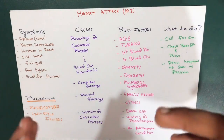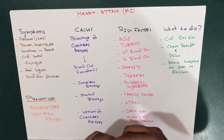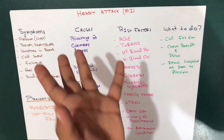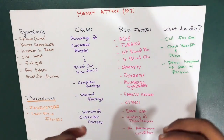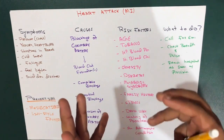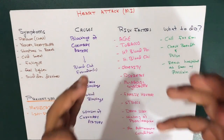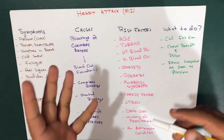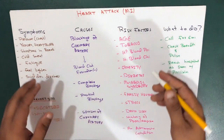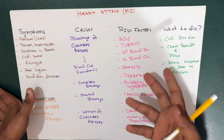During a heart attack, one of these plaques can rupture and spill cholesterol and other substances into the bloodstream. A blood clot forms at the site of the rupture. If the clot is large enough, it can block the flow of blood through the coronary artery, starving the heart muscle of oxygen and nutrients.